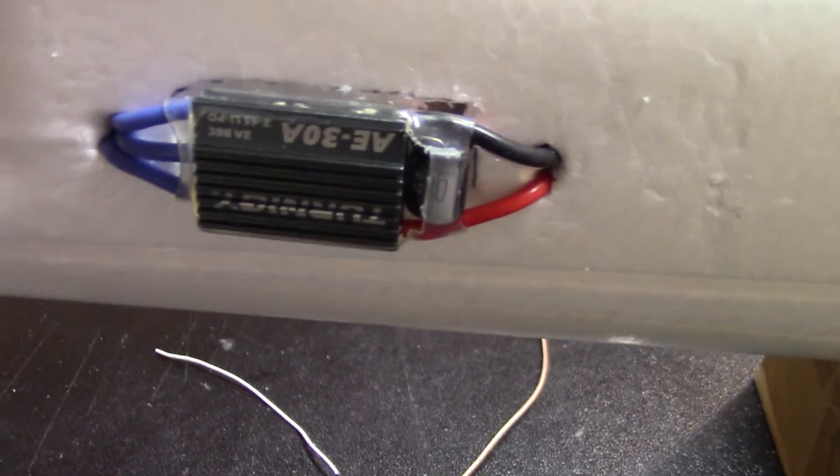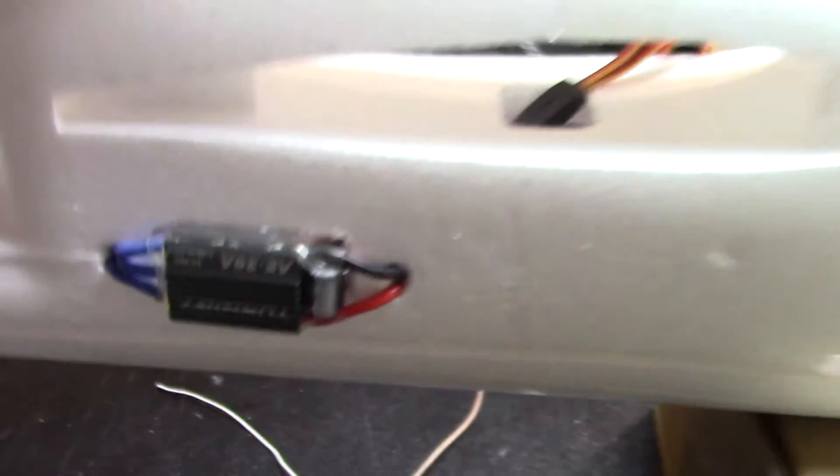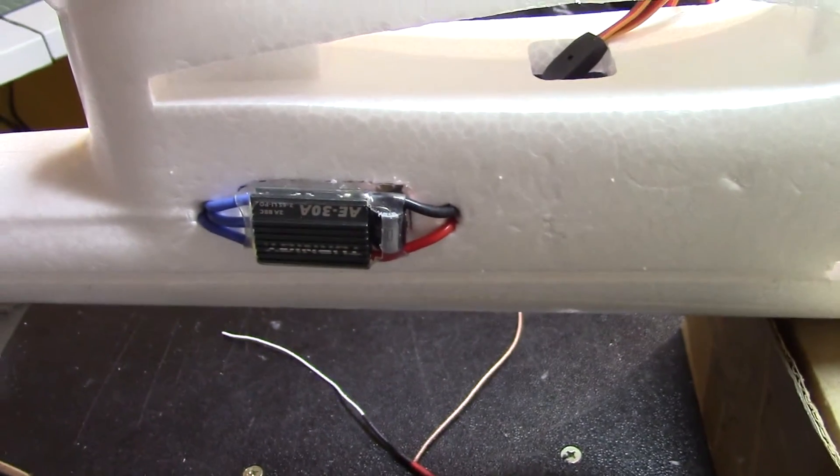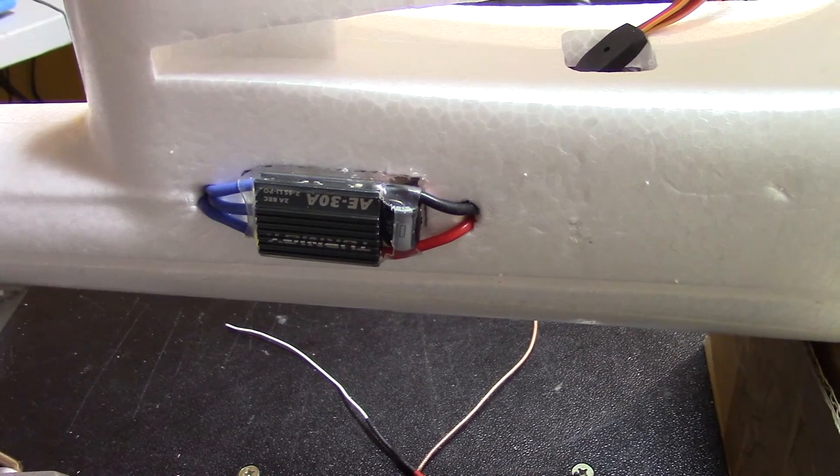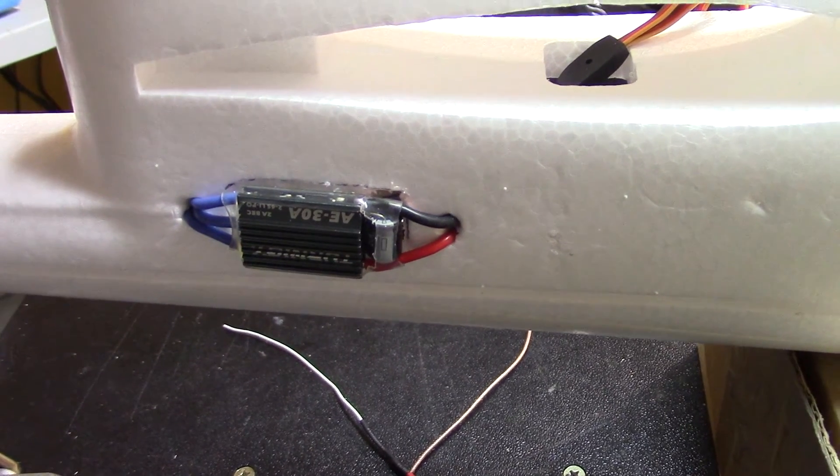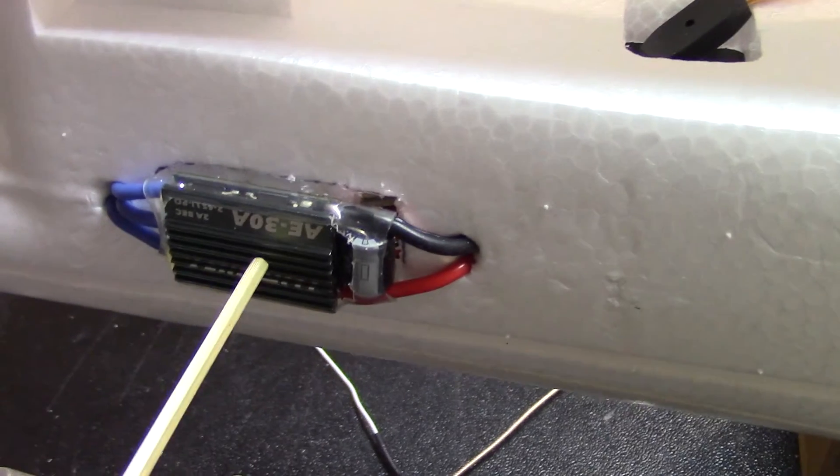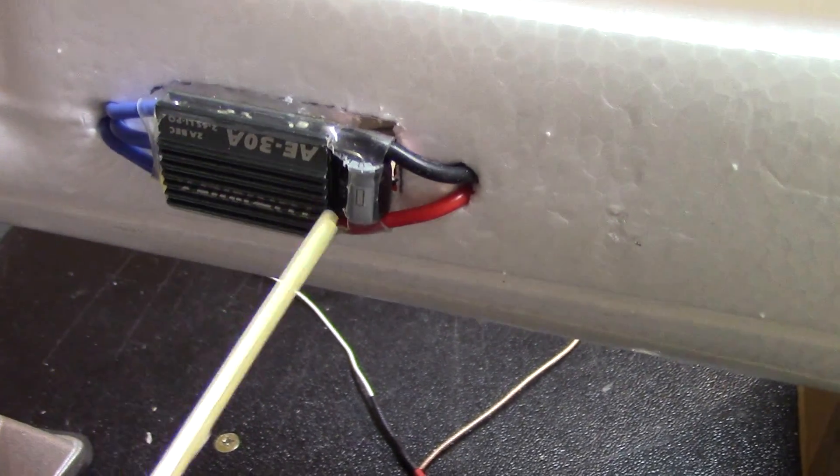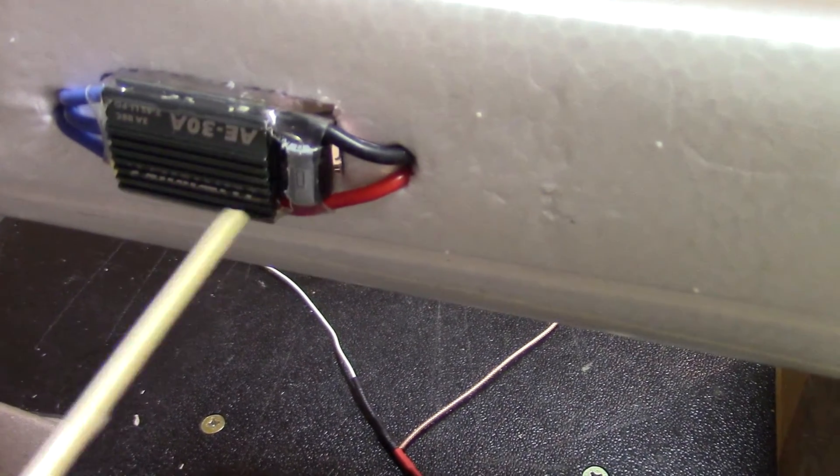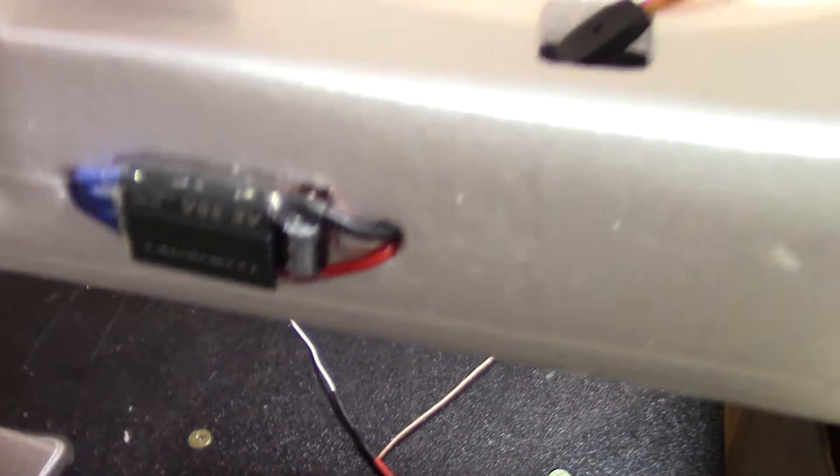This is using a Turnigy AE 30 amp ESC. I did a bit of testing a while ago and it does heat up a bit, but when it's up in the air there will be airflow, so I'm not overly concerned. What I did was actually cut the plastic cover for this part so that there will be more airflow when it's up in the air.